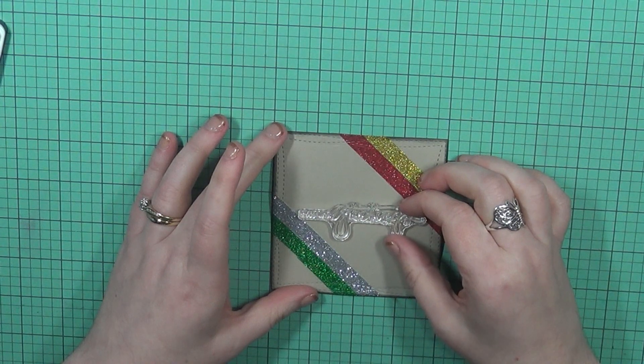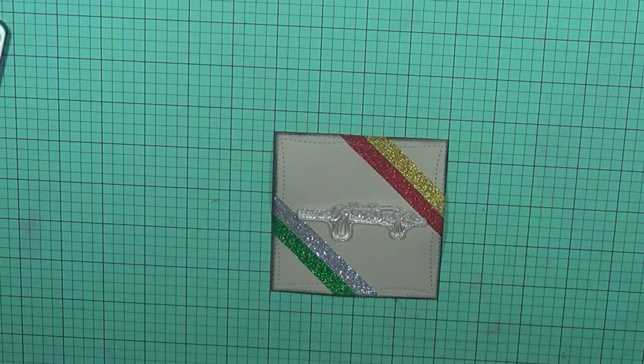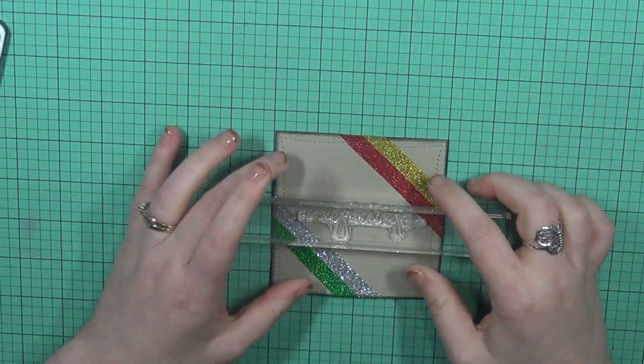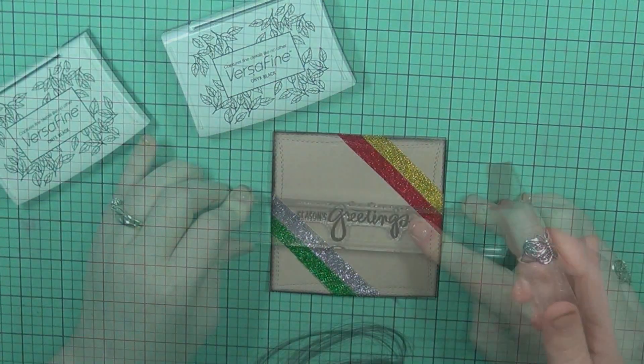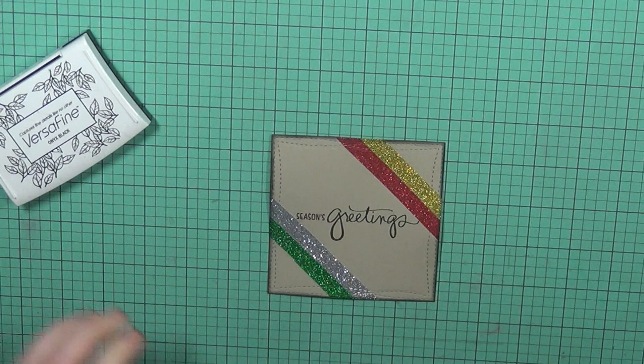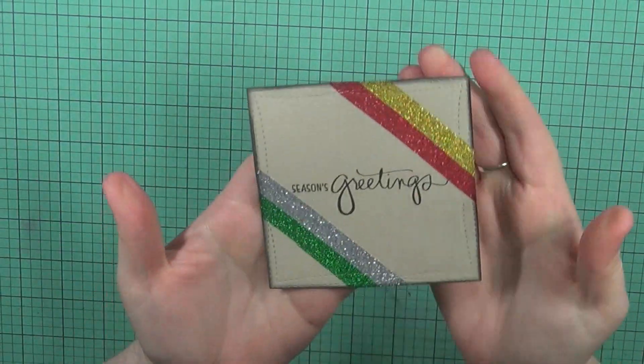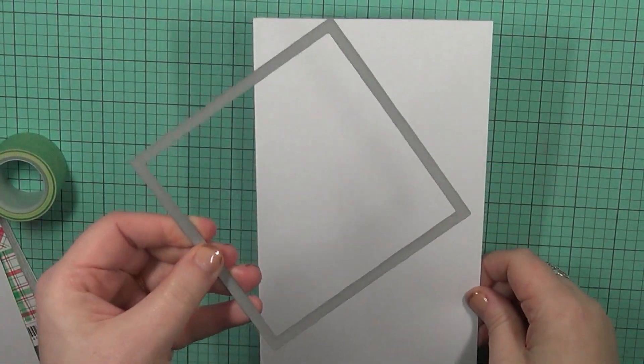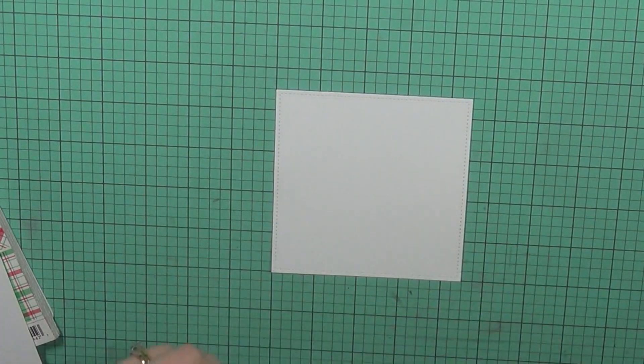So now I'm taking this stamp set here from my sentiment. This is from Mama Elephant. It's called Jingle Greetings. And I'm taking this one here. I believe this one says festive greetings. And it just fits perfectly inside that middle space of my panel here. So I'll just line that up onto my acrylic block. And I'm going to stamp that down with my VersaFine Onyx Black Ink. And so I've got that all stamped down and you can see it's really simple, but it really is pretty with the glitter tapes.